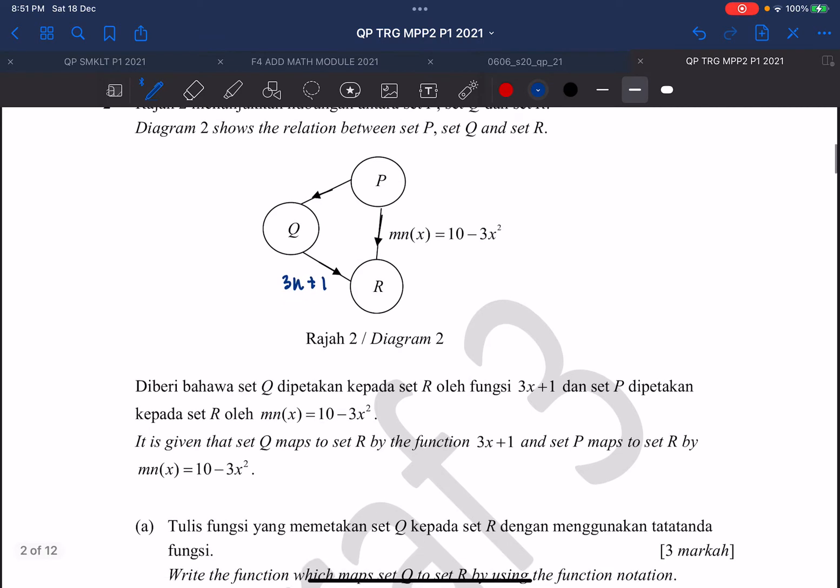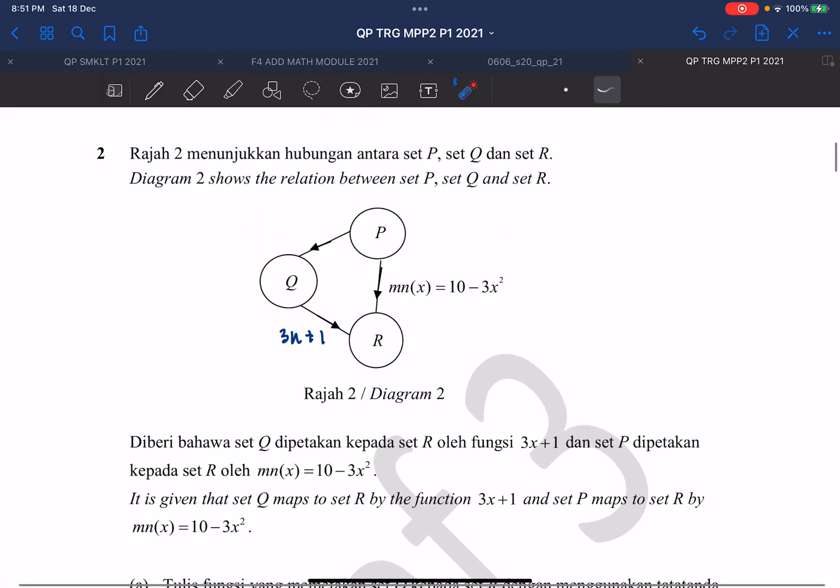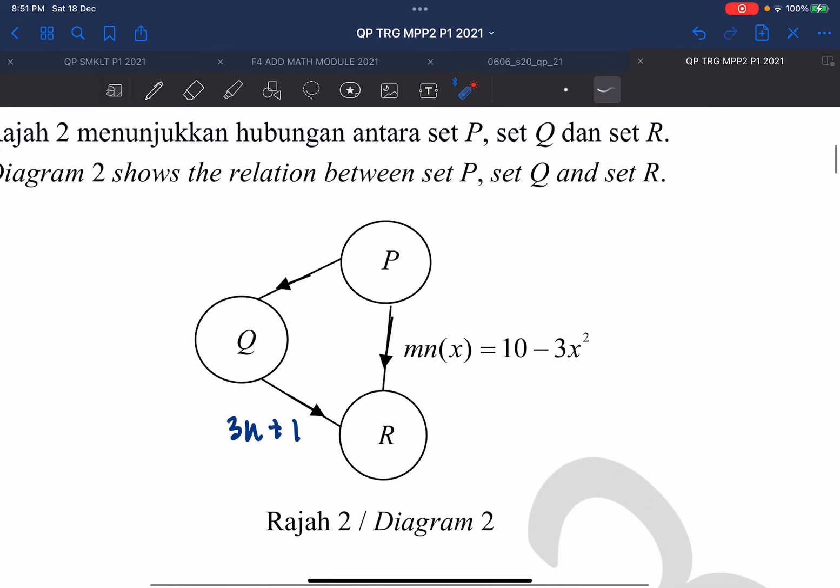So we just leave it there. For question A, write the function which maps set Q to R. So they want us to find function Q to R by using the function notation. So we enlarge the diagram, we focus on the diagram. So P to R is actually another route, alternative route from P to Q and Q to R. So P to R is actually a composite function, MN.